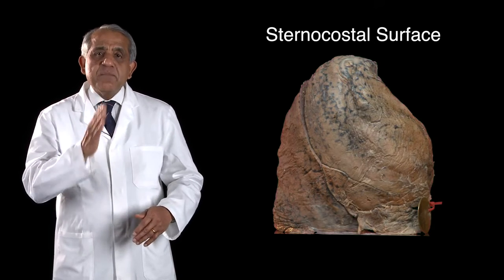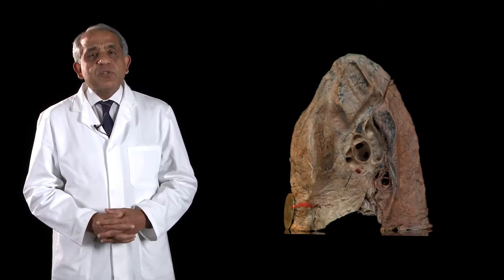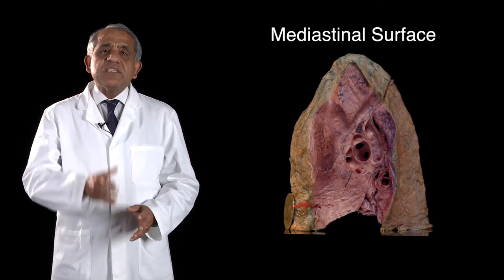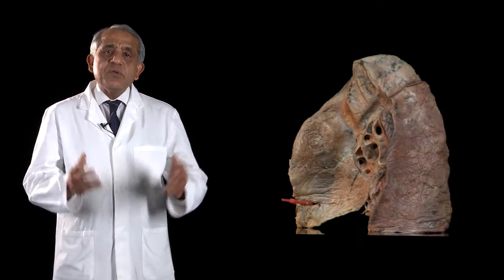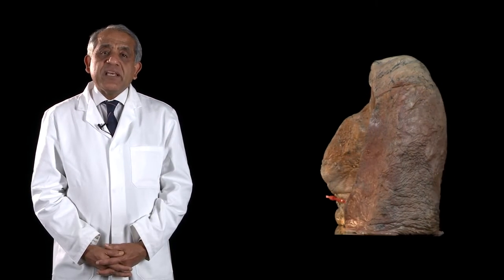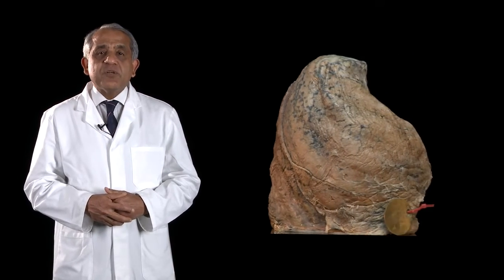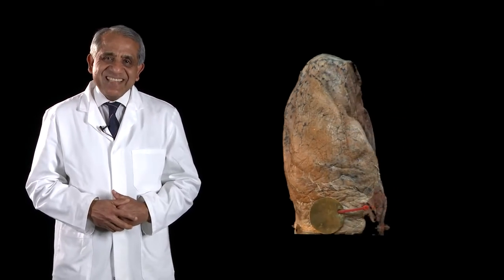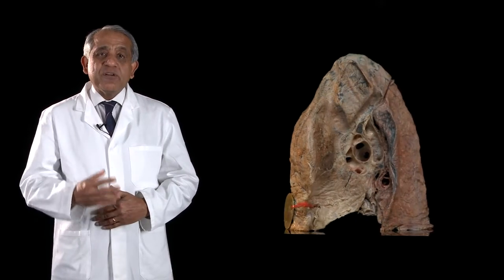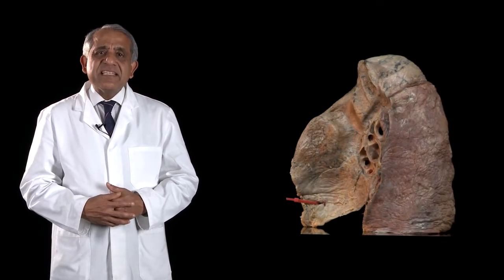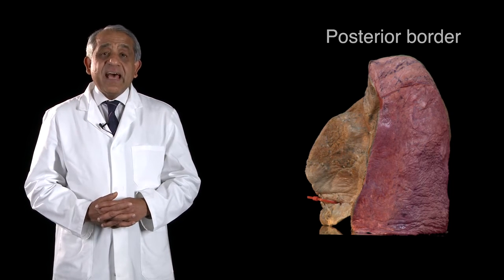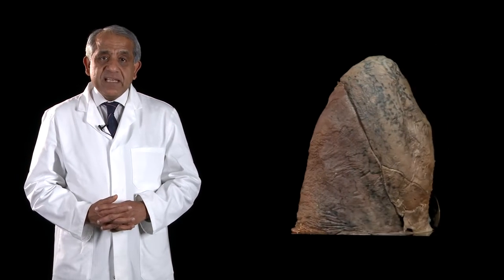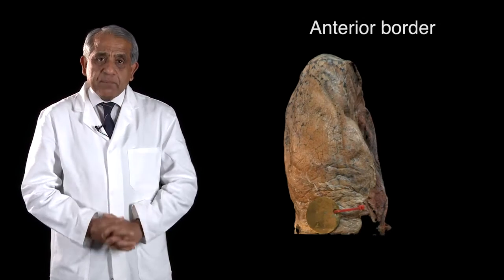The other surface is the medial surface, which frequently is also called the mediastinal surface because it forms the boundary of the mediastinum. These two surfaces are separated from each other by an anterior border of the lung and a posterior border of the lung, and these two borders are very different in appearance. The posterior border is a rounded border and it sits in the paravertebral gutter of the thoracic region. The anterior border by contrast is a fairly acute or pinched or sharp border.